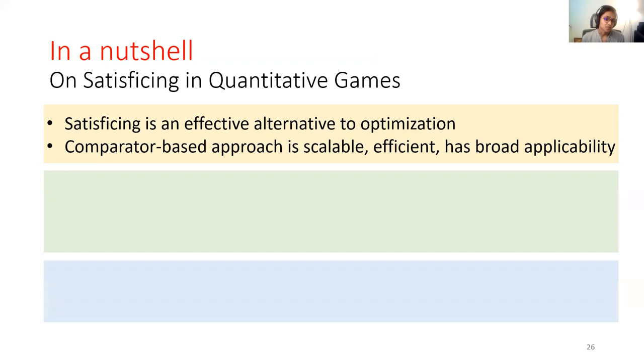So to summarize, this talk is about satisficing in quantitative games. And we have shown that satisficing could be an effective alternative to optimization. However, the benefits of satisficing are shown only when we use comparator-based approach, which shows that comparator-based approach is indeed a good way to solve the satisficing problem.